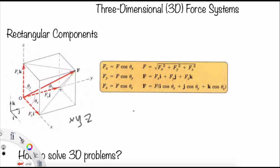For example, to find the component of F in the x direction: as in the two-dimensional case, we can use F cos theta x. Similarly, Fy is F cos theta y, and Fz is F cos theta z. To find the resultant of all forces, it is the square root of Fx squared plus Fy squared plus Fz squared.